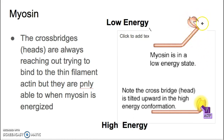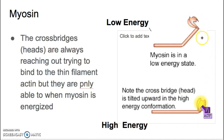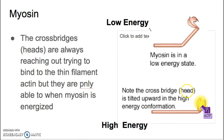At all times, these cross bridges or heads want to grab onto actin, but they can only reach the actin when they're straight out — in the high energy state. This is the low energy state of myosin, and this is the high energy state of myosin. Myosin needs to be in its high energy state in order to grab onto actin.